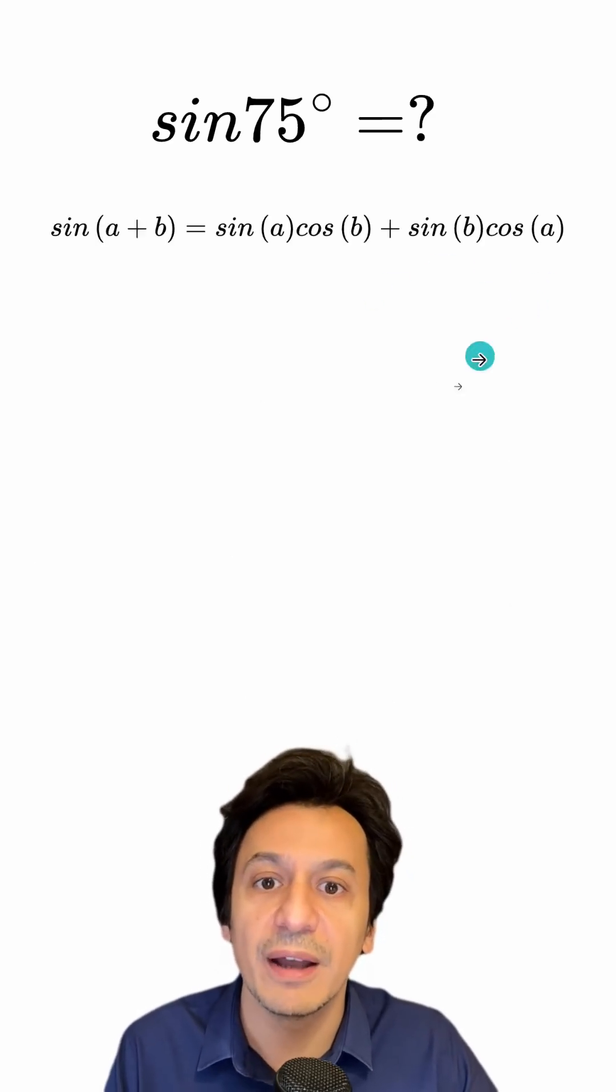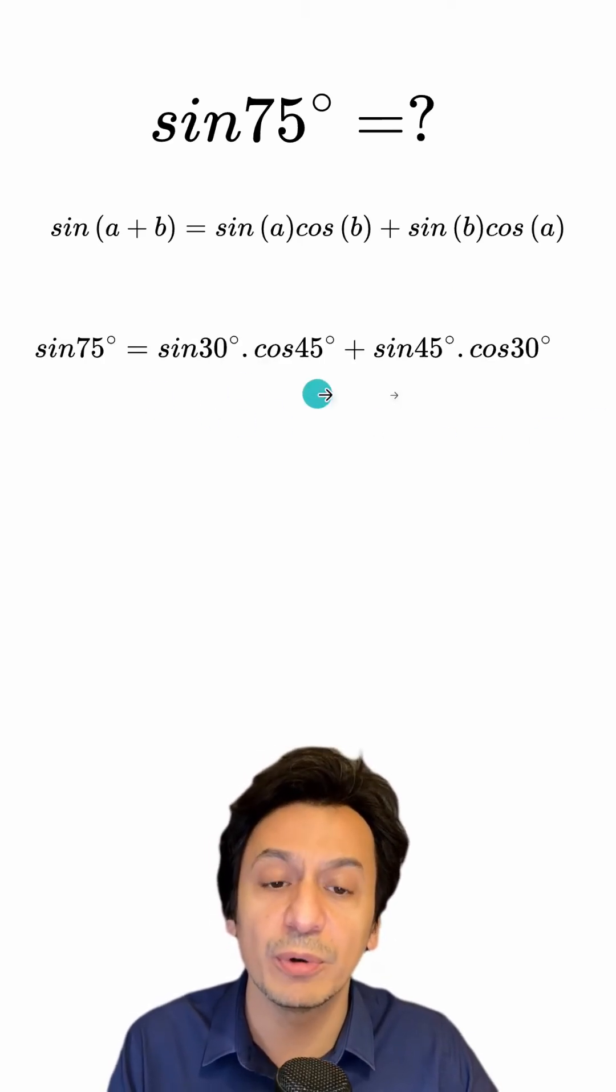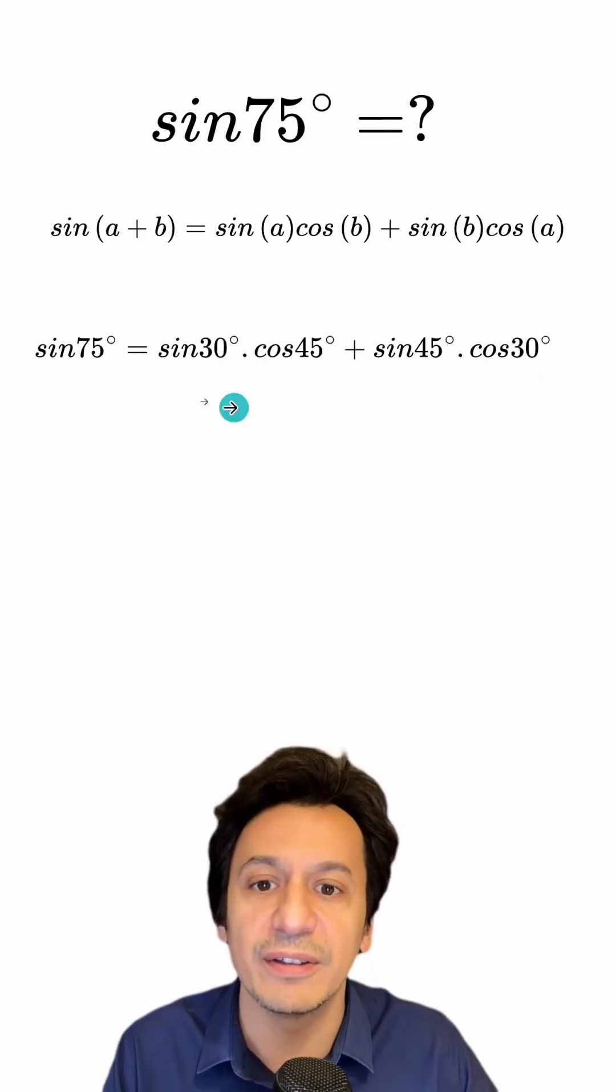Now in the formula you see here, I'm replacing the a's with 30 and the b's with 45. Now I'm going to write the trigonometric ratios here in their places.